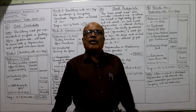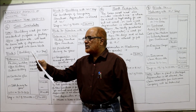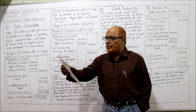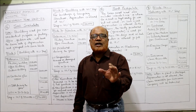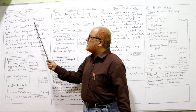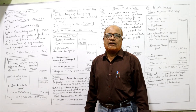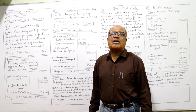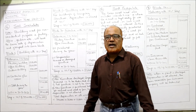Now I'm explaining problem number six. Srimati Sneha Lata furnished the following particulars relating to her business assets. Calculate the amount of depreciation allowed for the previous year relevant to the current assessment year. Our current assessment year is 2021-22. For this, the previous year begins from 1st April 2020 and ends on 31st March 2021.